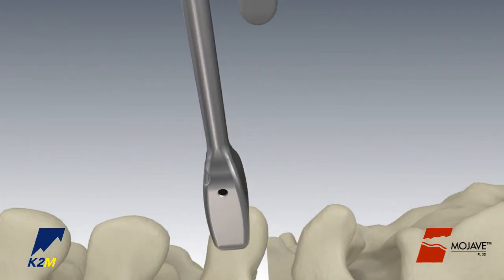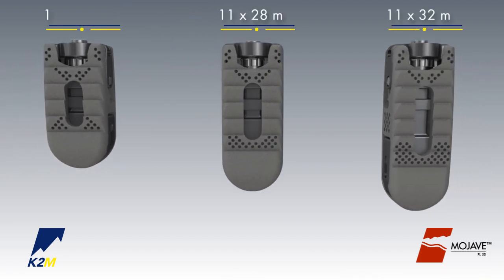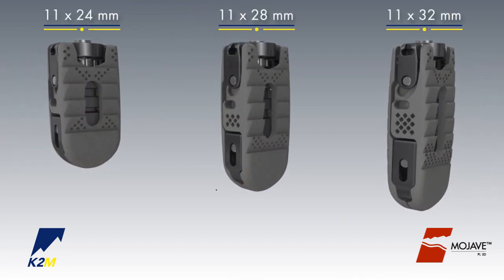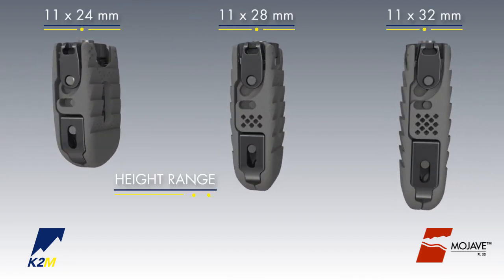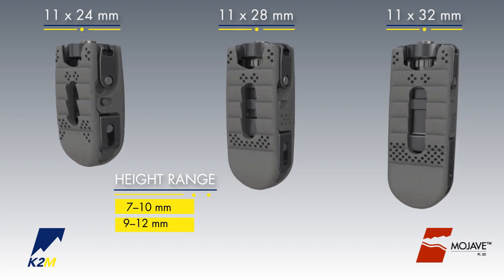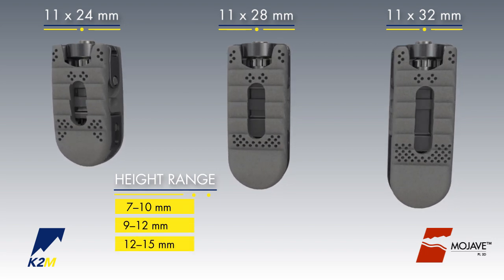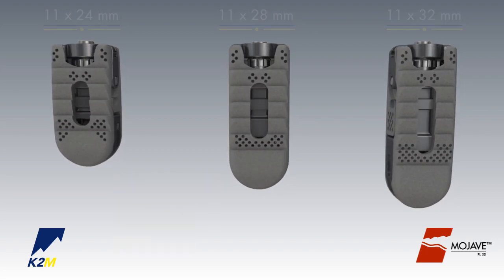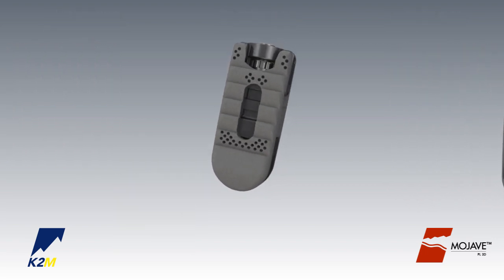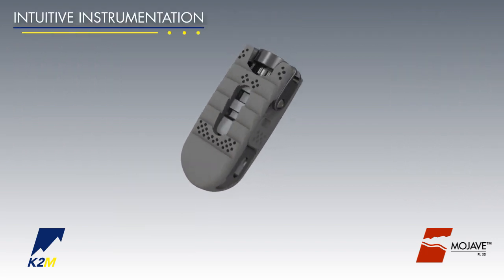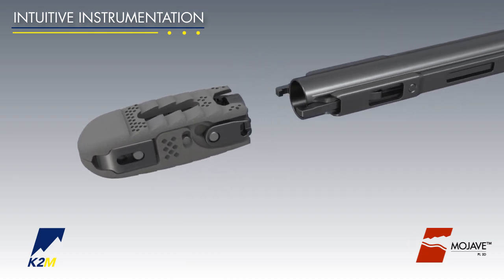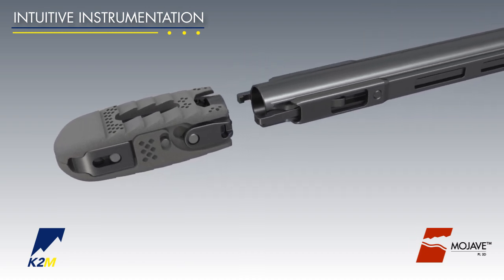Mojave PL3D Expandable Implants are available in three footprints with starting heights offered in 7, 9, and 12 millimeters. The Mojave PL3D Implants can be used in either a modified T-LIF approach or a PLIF approach.